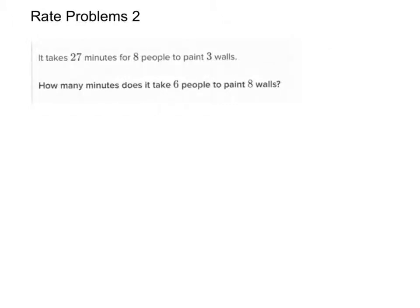In this video we're going to do some more complicated rate problems. On Khan Academy you can search 'Rate Problems 2'. The problem says: it takes 27 minutes for 8 people to paint 3 walls. How many minutes does it take for 6 people to paint 8 walls?